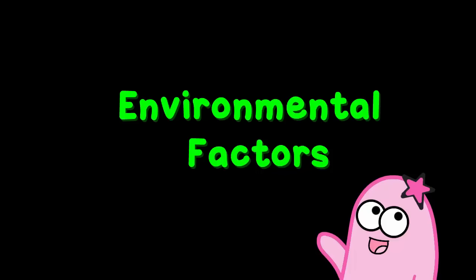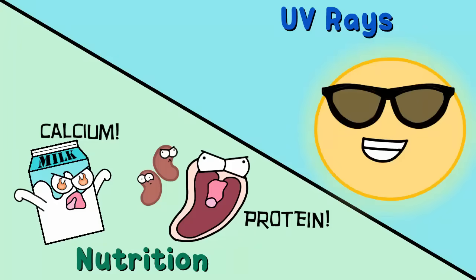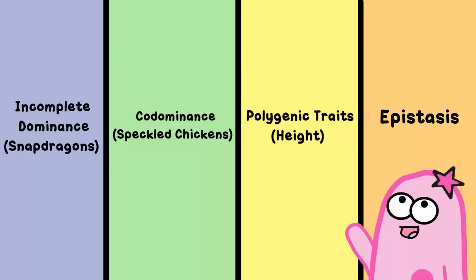Both height and skin color can be influenced by environmental factors as well. Nutrition growing up can affect your height, just as spending a lot of time in the sun can affect your skin color. However, this doesn't change the genetics for these traits.